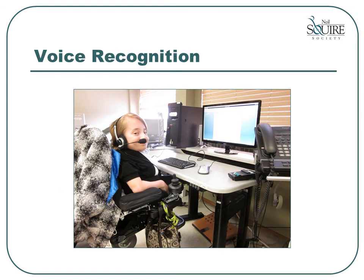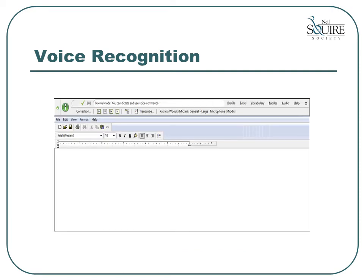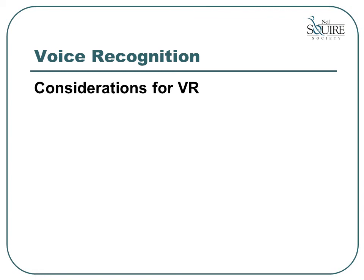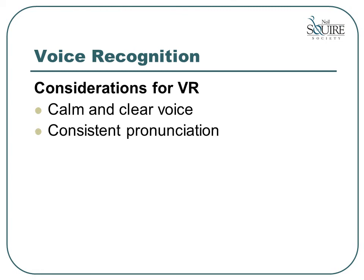One of the most popular options for typing is to use your voice. The software program that enables you to do this is called Dragon Naturally Speaking. This program has been on the market for almost 20 years, but has only recently become good enough to be a useful tool. The program recognizes your speech phrase by phrase, and can make a very accurate guess at what you are saying based on not just what it hears, but also which words it expects to see together. Although the software can be very accurate, there are some conditions to achieve that level of accuracy. You must have a calm and clear voice, and your pronunciation must be consistent — this is especially important if you have an accent. You must also have a good understanding of English grammar, as the program uses the structure of the English language to make its best guess about what you have said.